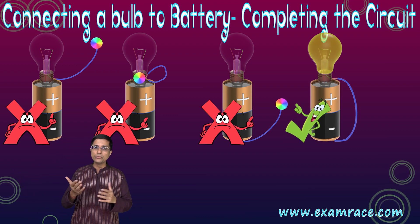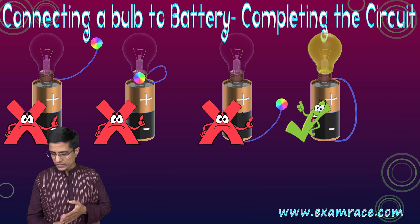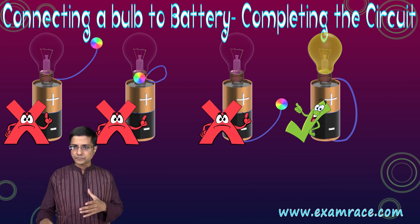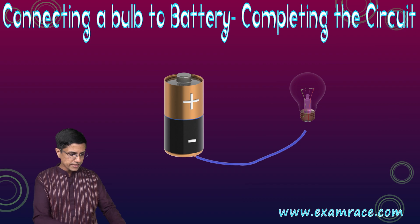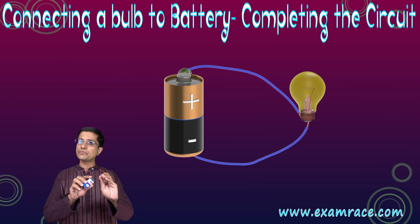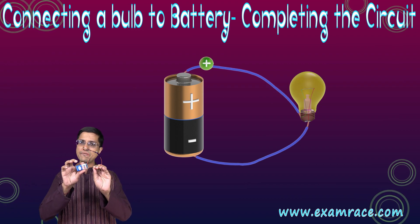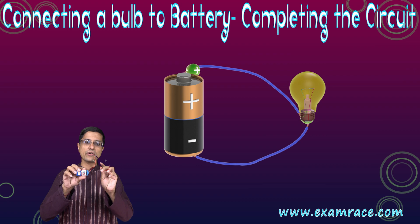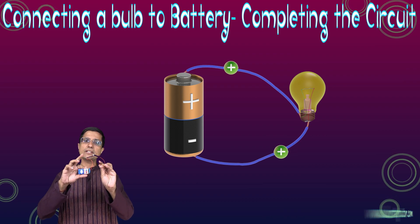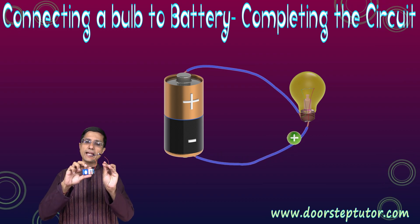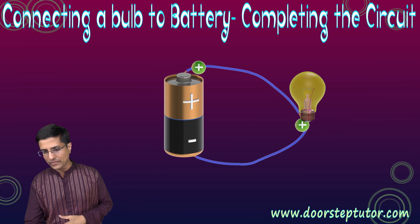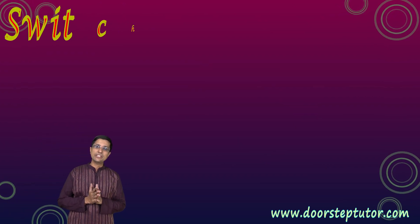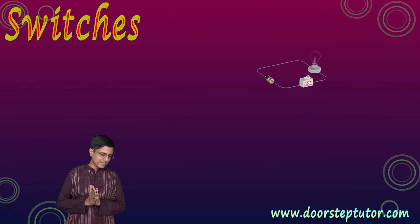As soon as we do that, the current flows. The battery drives the electrons — this is the driving force. It drives the electrons through the wires, through the filament of the bulb, and back. And of course, the bulb lights up.